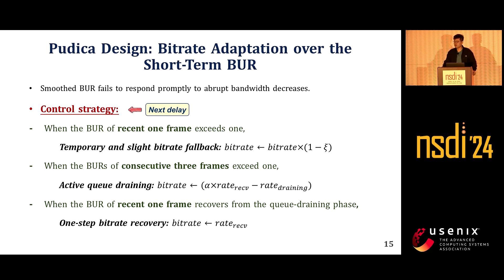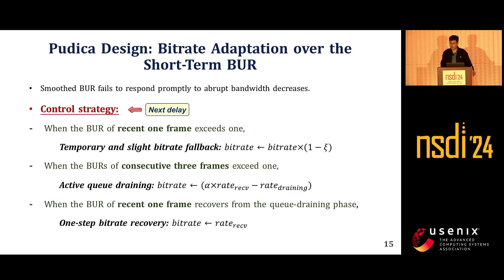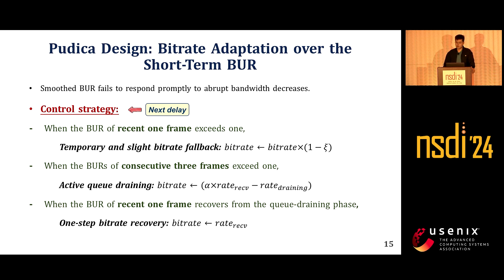Here I want to emphasize a useful trick we employ. Even if we haven't received acknowledgement of a frame, Piotica calculates how long it has been in the network pipe — which we call the in-flight delay. If the in-flight delay is significant, Piotica will reduce the bitrate as well. This technology enables us to respond to congestion more timely and quickly.